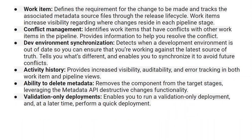There are a few key terminologies to remember. A work item defines the requirement for the change to be made and tracks the associated metadata source control files through the release lifecycle, increasing visibility regarding changes at each pipeline stage. Conflict management lets you identify work items that have conflicts with other items in the pipeline and provides information to help you resolve those conflicts. Dev environment synchronization detects when the development environment is out of date so you can ensure you're working against the latest source of truth, tells you what's different, and enables you to synchronize to avoid future conflicts.